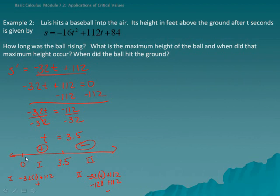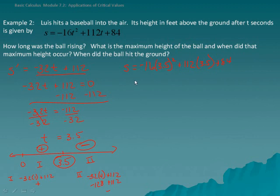The ball rose from t equals 0 to t equals 3.5 seconds. To find the maximum height, we plug t equals 3.5 into the original function: negative 16 times 3.5 squared plus 112 times 3.5 plus 84. This gives s equal to 280 feet. So the ball reached a maximum height of 280 feet at 3.5 seconds.